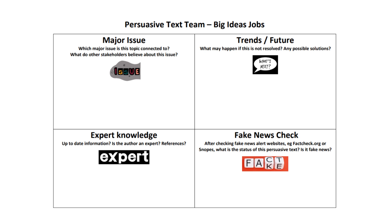The big ideas team will be having a look at what issue this topic is connected to, and maybe talking about what other stakeholders believe about this issue. The second team member will look at what will happen in the future if this is not resolved. The third team member will look at whether this author is an expert or not. And the fourth team member will be doing a fake news check to see whether this text is based on something that's real, or whether the author has gone off on a jag and it's actually fake news.